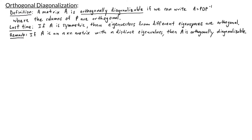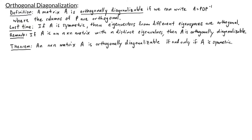If A is a symmetric matrix, then it's always diagonalizable, meaning that the dimension of its eigenspaces will always add up to n. Moreover, we can also say that if A is an orthogonally diagonalizable matrix, then we know it's symmetric. These two statements give us the theorem: an n by n matrix A is orthogonally diagonalizable if and only if A is symmetric. We won't be going through a proof of this theorem in this video, but I do want to go through an example of diagonalizing a 3 by 3 symmetric matrix that doesn't have three distinct eigenvalues.